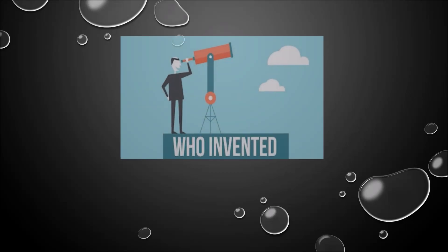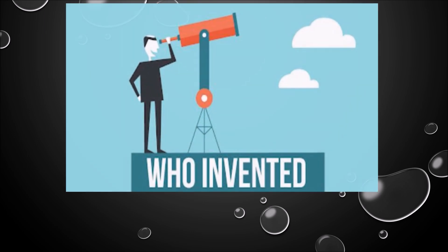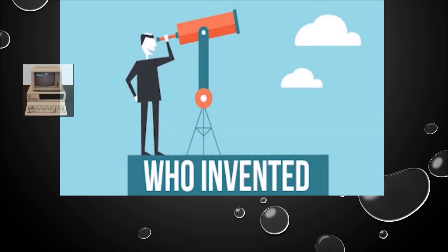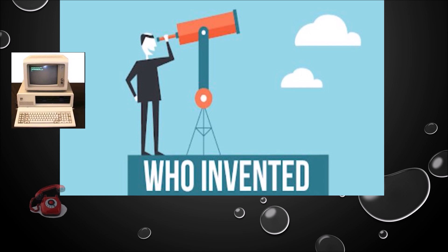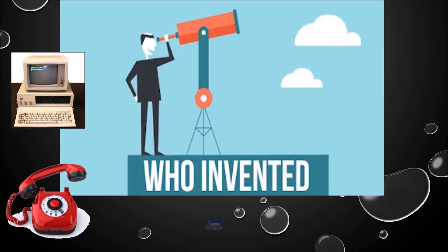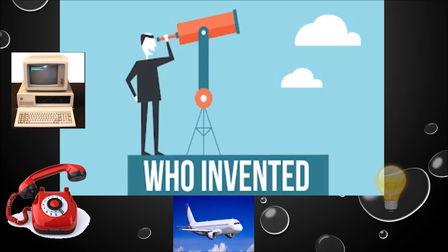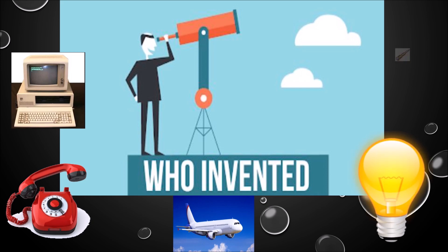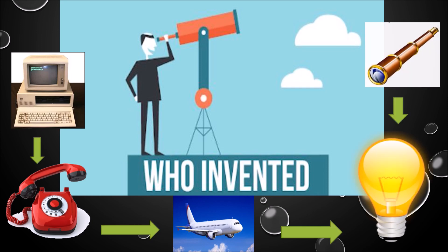Hi everyone, welcome back to our channel. Today we came with the topic of invention and their inventors. Invention is a thing that has been made or designed by somebody for the first time. An inventor is a person who creates or discovers a new device, known as an invention. In this video we will cover some basic inventions like computer, telephone, aeroplane, electric bulb, telescope, and a few more. So let's get started.